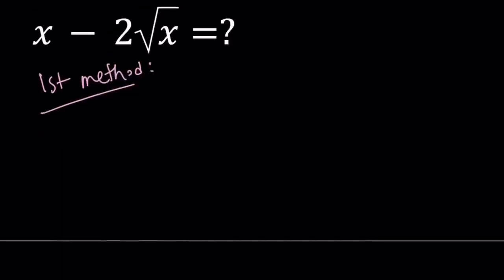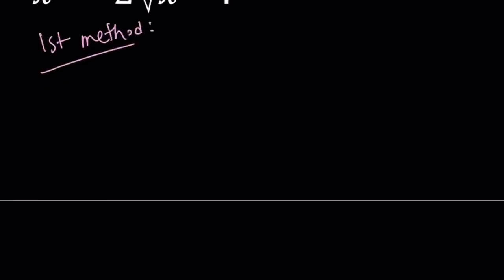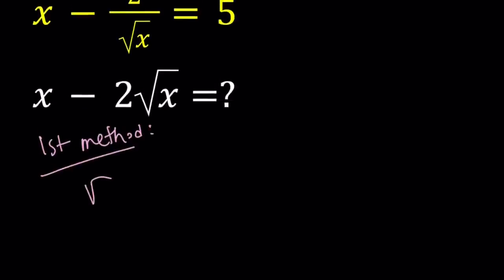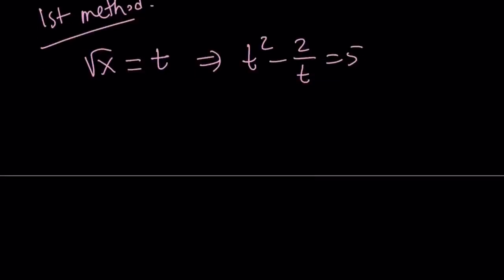Let's start with the first method. I'm hoping that you'll find the second method cooler, but let me know. So my first method involves substitution. Let's set square root of x equal to t and then from here we get the following: t squared minus 2 over t equals 5. If you multiply both sides by t, t cubed minus 2 equals 5t and then you get t cubed minus 5t minus 2 is equal to 0.